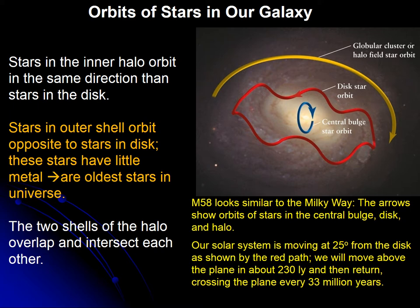The motion of the stars in those halos is illustrated in this drawing. We can see the direction of motion of the stars in the central bulge of the galaxy, whereas the stars in the disk move in the opposite direction. This wiggling path means that the stars are moving through the disk — they go from the bottom to the top and then bounce back, continuing in that oscillating fashion.